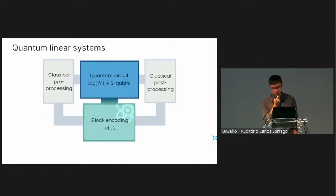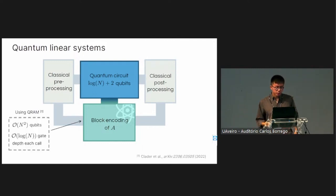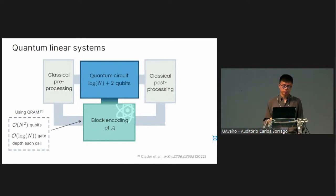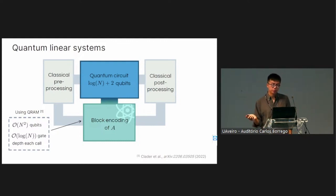A block encoding is a modern approach to providing quantum access to classical data — we embed an arbitrary matrix A into a larger unitary. For generic A, if we want to implement this block encoding using QRAM with only O(log N) gate depth per call, this can require up to O(N squared) qubits. Further refinements still seem to require at least O(N) qubits, which seems alarming when the algorithm itself only uses O(log N) qubits.